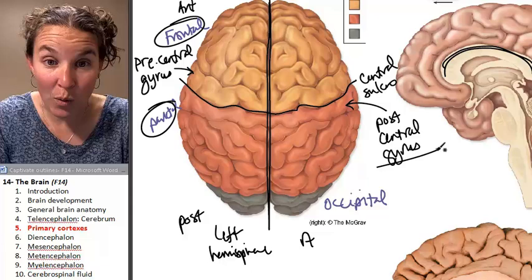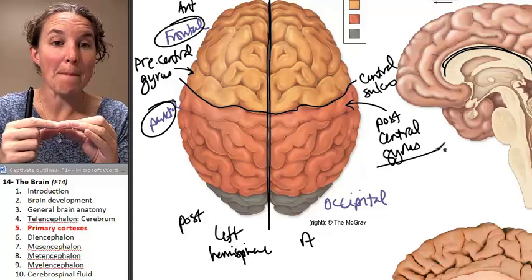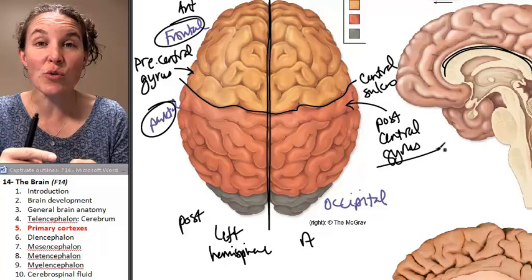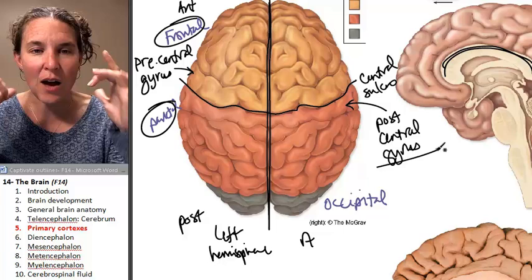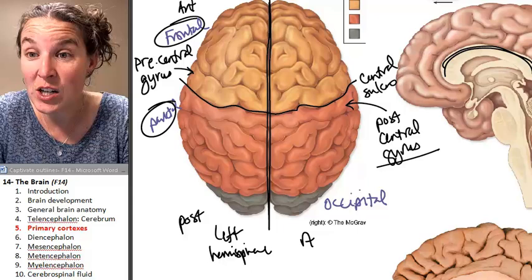Those are anatomical structures — bumps on your brain that we can find and identify. The precentral gyrus is the most posterior bump on the frontal lobe. The postcentral gyrus is the most anterior bump on the parietal lobe. These are just anatomical structures, but why do we care? They have functional significance.